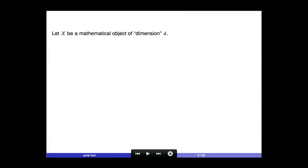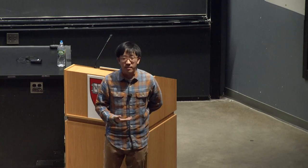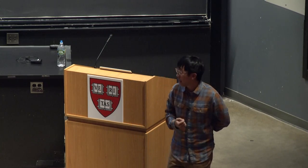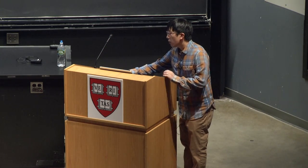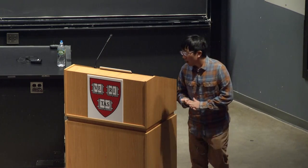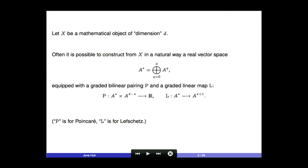Let's say X is your favorite mathematical object, and suppose it has a certain structure — maybe a geometric one — so that you have a natural notion of dimension. Let's say your X has dimension D. From X you can associate a vector space, which is often called the cohomology of X, a graded vector space over the real numbers, with the grading going from 0 to D.